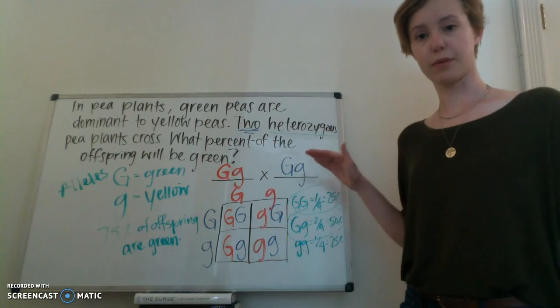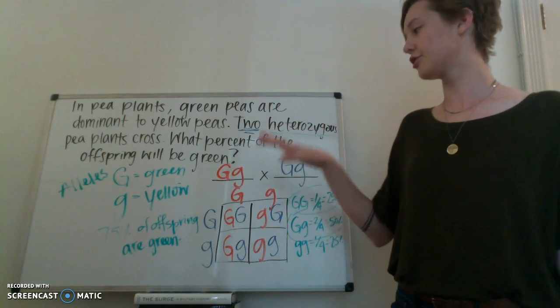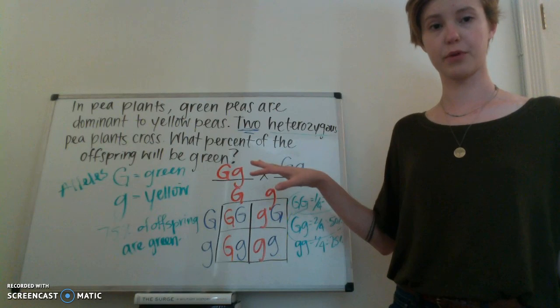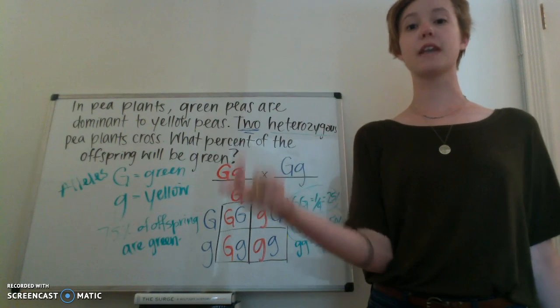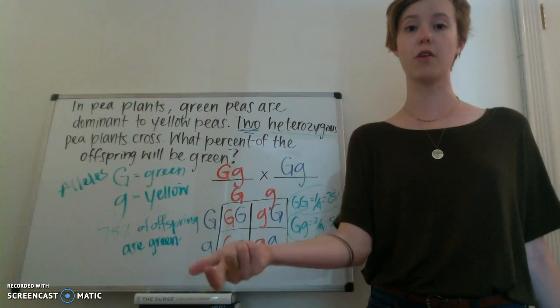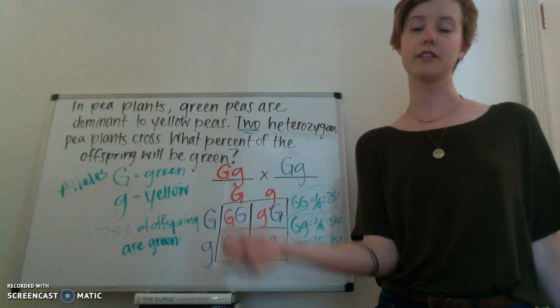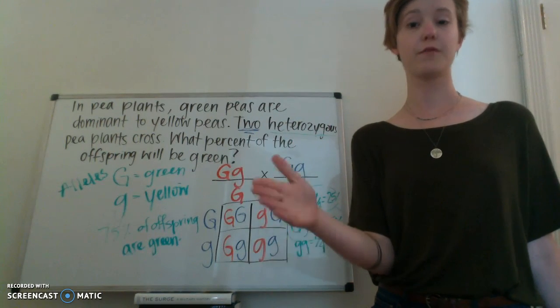So this is how we solve a Punnett square problem. I've shown you how to solve this first one on your checkpoint. You actually have a second Punnett square problem that you need to set up and solve, and then show Ms. Harris so that she can check your work. If you have questions, raise your hand.